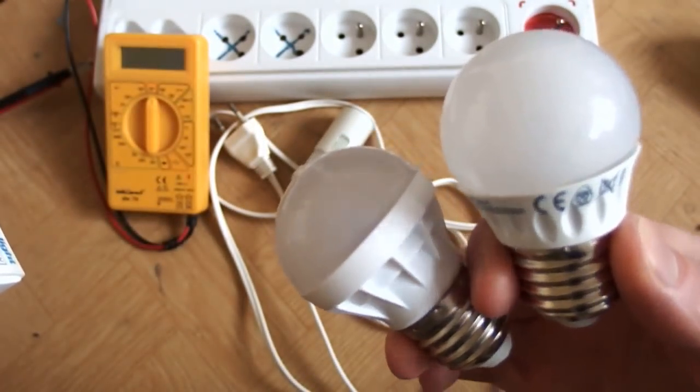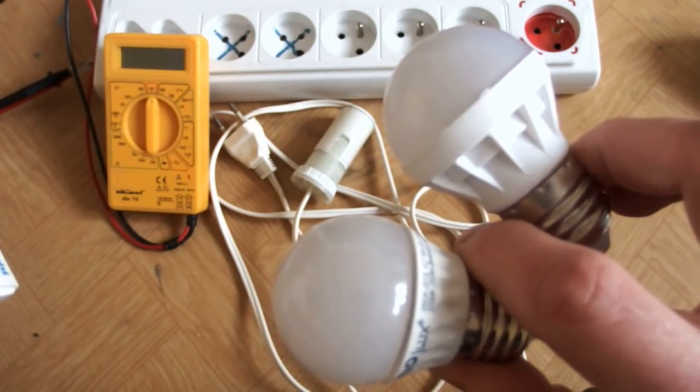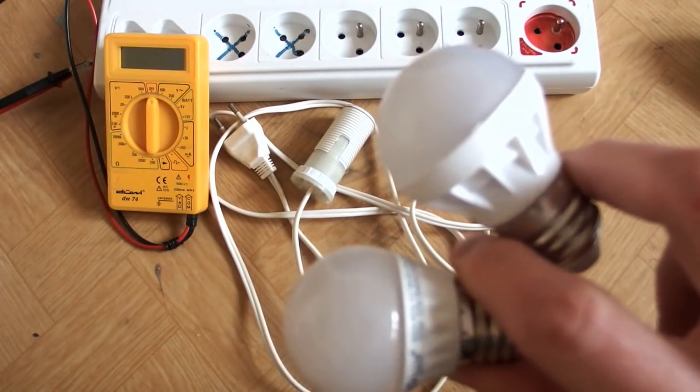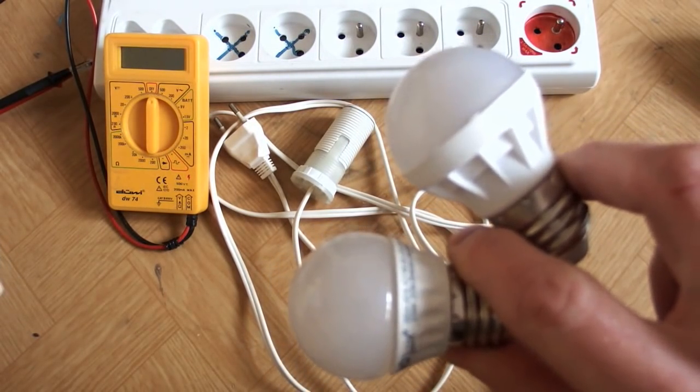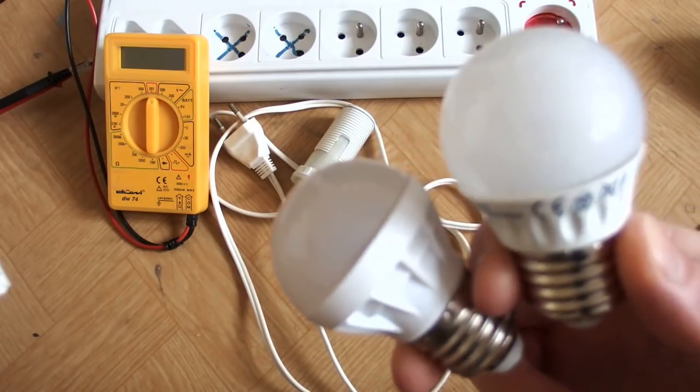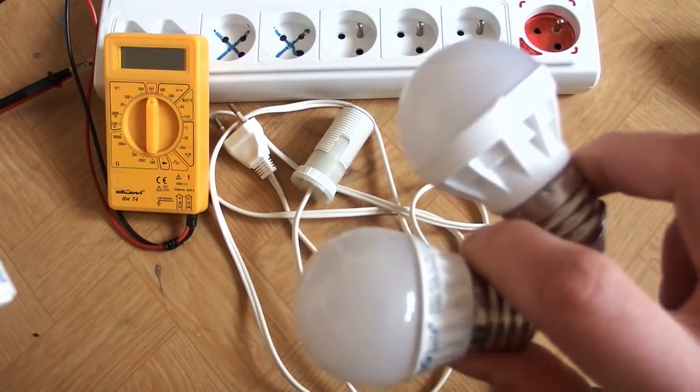And the last time I have disassembled those two LED light bulbs, one from a local supermarket and one from eBay. And the quality was quite a difference but both of them had almost the same schematic, it was a capacitive dropper.